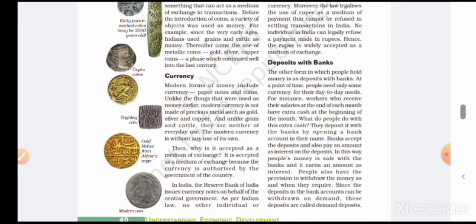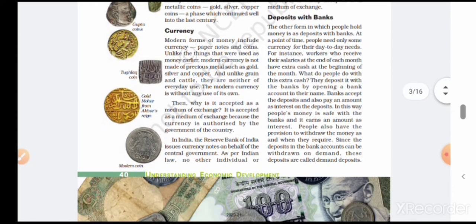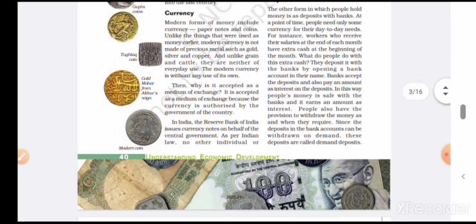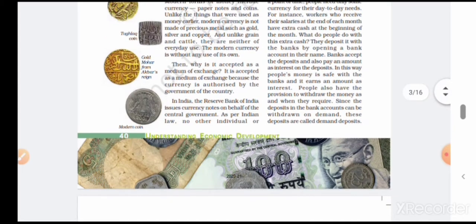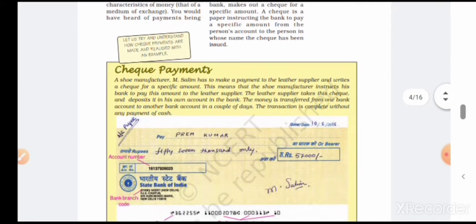Today we're discussing deposits with banks. People need currency for day-to-day needs. For instance, workers who receive salary at month's end have extra cash at the beginning of the month. We know that when we get salary we have a huge amount of money, but gradually we spend it and by month's end it vanishes. So in early times, we take out limited money from the bank and deposit the rest there.